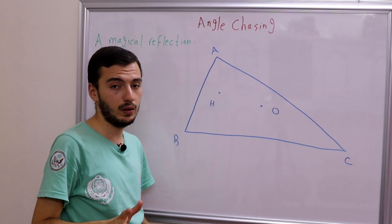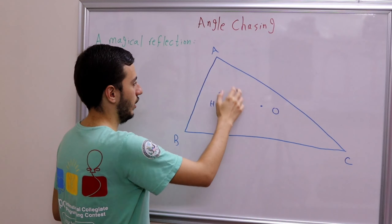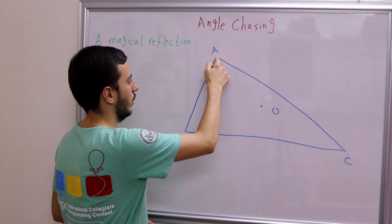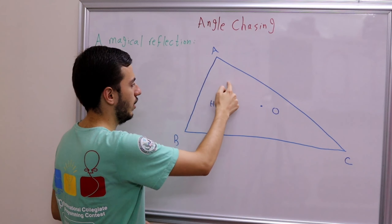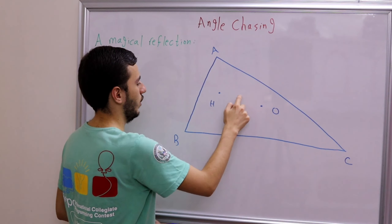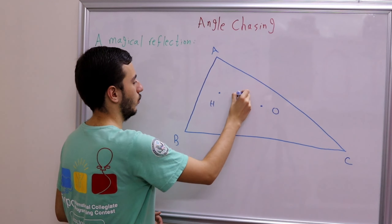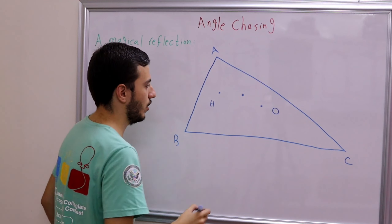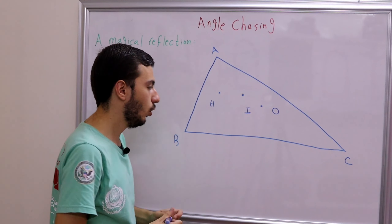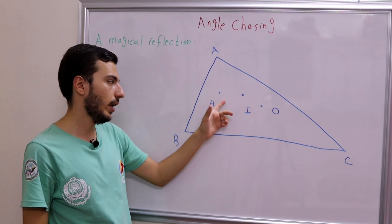Now we're left with the third center, the incenter I, which is the meeting point of the three angle bisectors. So this is the angle bisector of A, this is the angle bisector of B, and they should meet somewhere right here. So let's say this is I. Now we have triangle ABC with the three centers H, I, and O.